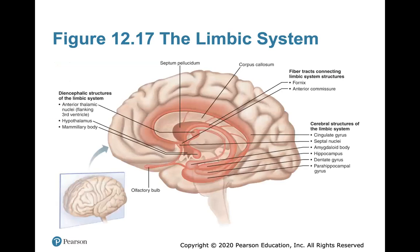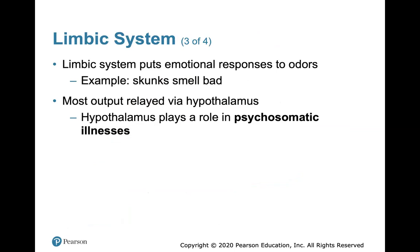Here's a look at the limbic system. What I want you to know is the general function, but you don't need to know all the details of what each part does. The limbic system also puts emotional responses to odors — for example, skunks smell bad. Most of the output is relayed via your hypothalamus and that plays a role in psychosomatic illnesses. The limbic system interacts with different prefrontal lobes.